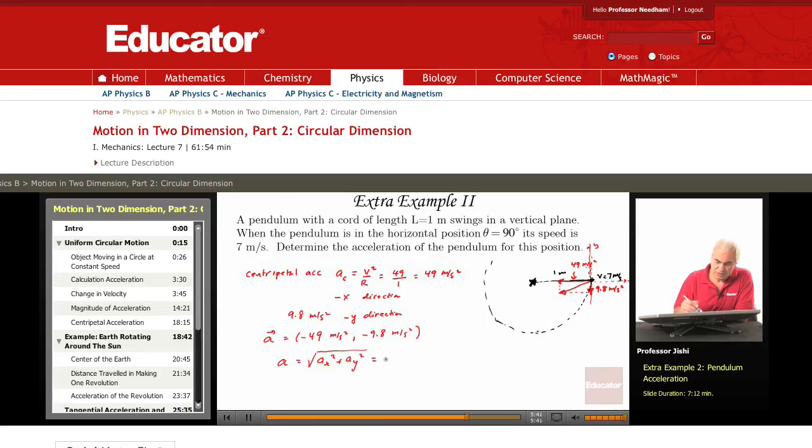Which is the square root of 49 squared plus 9.8 squared, which is 9.8 times the square root of 26. So that's about 50 meters per second squared. This is the magnitude of the acceleration.